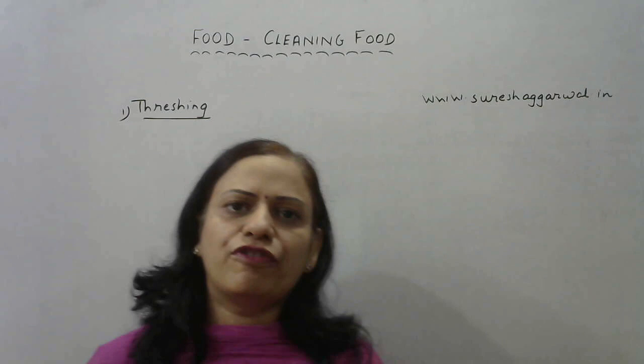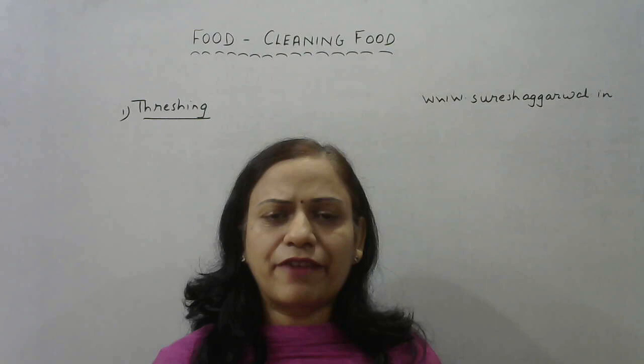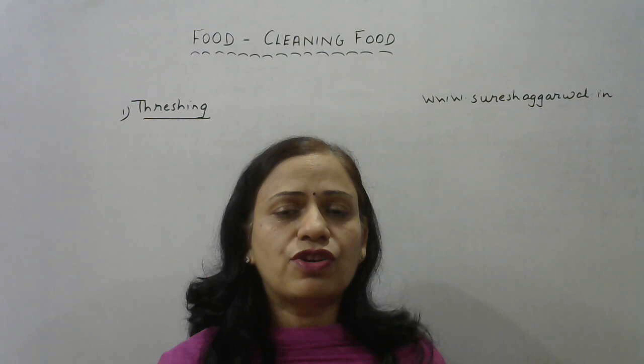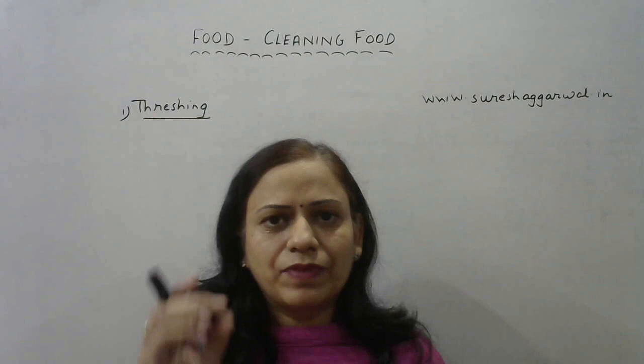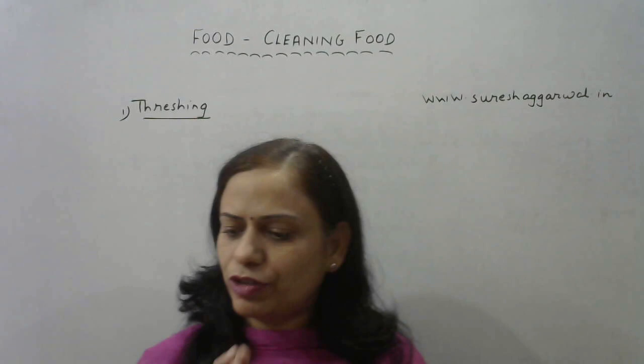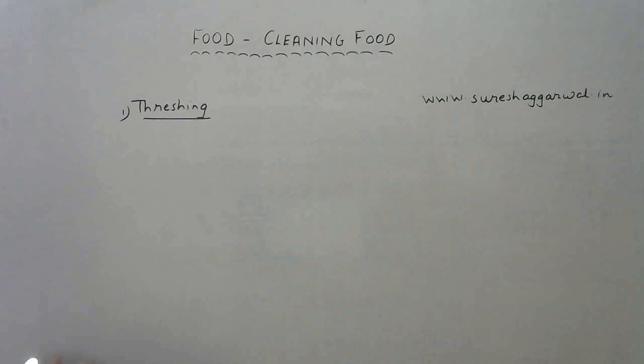Threshing is done for grains, not for vegetables and fruits, because those are hand-picked. Grains need to be separated from the plant by threshing — it is the process of separation of the grains from the shaft. The shaft is the stick or main body of the plant; once harvested it is almost dry and the grains are present on top.